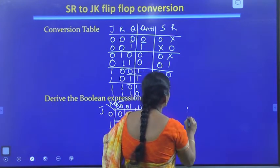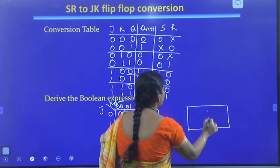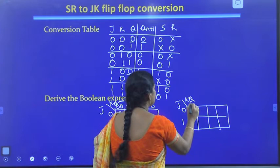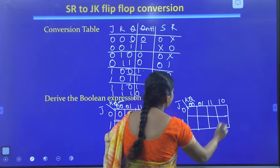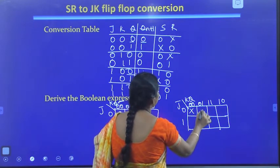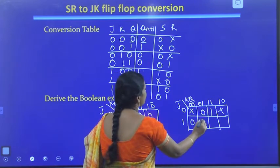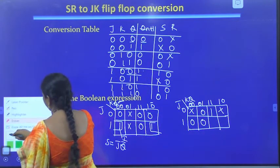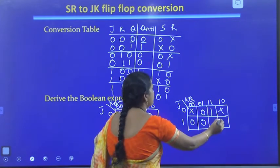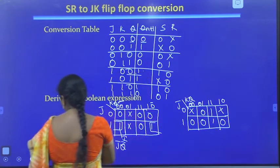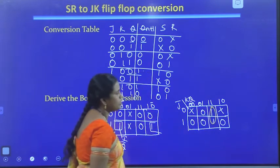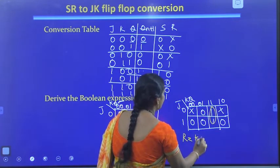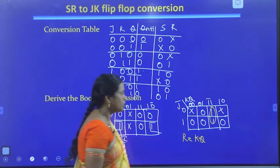Similarly, for R we take a three-variable K-map with inputs J, K, and Q. Filling in the R values: don't care, 0, don't care, 1, 0, 0, 0, 1. Grouping appropriately, the expression obtained is R = K · Q. So we now have both equations: S = J · Q-bar and R = K · Q.